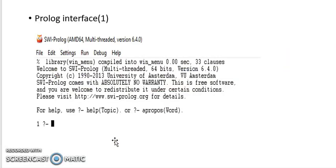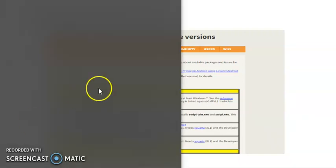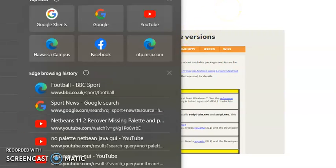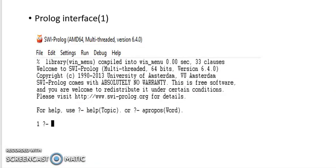After downloading the Prolog editor you have to install it on your machine. After installation you can search for it from your machine. You will find an interface with options like File, Edit, Settings, Run — a full interface that looks like this.